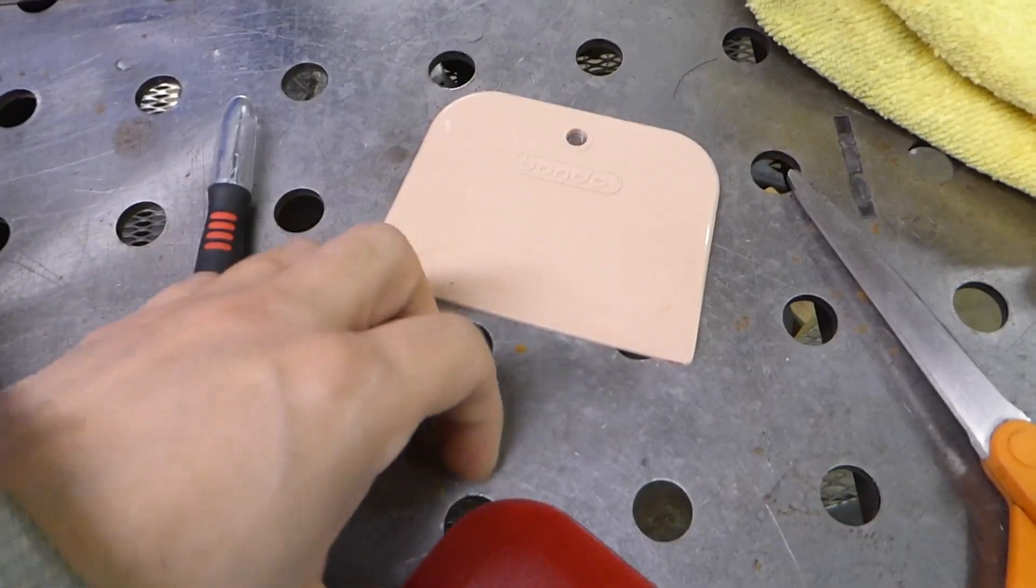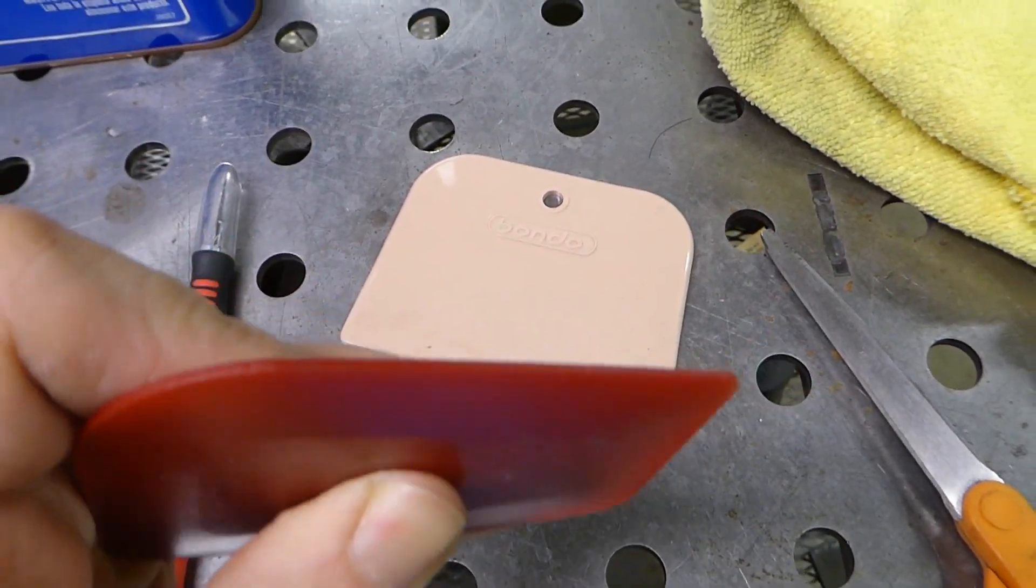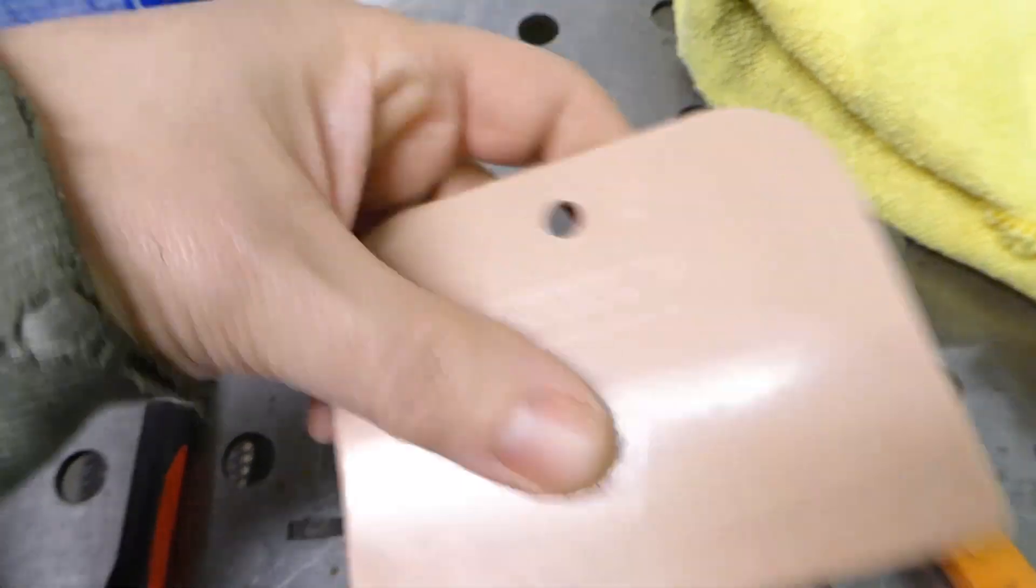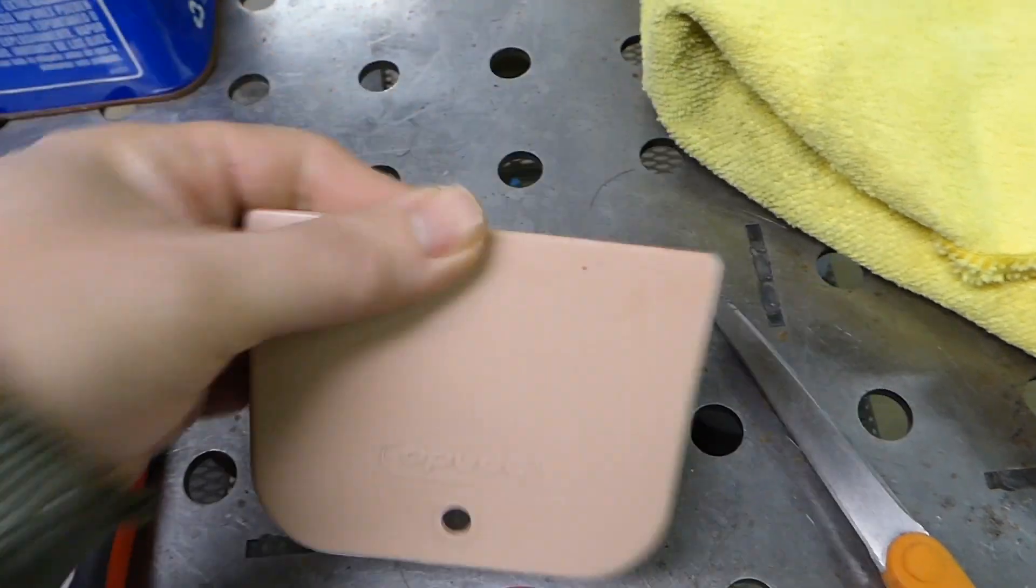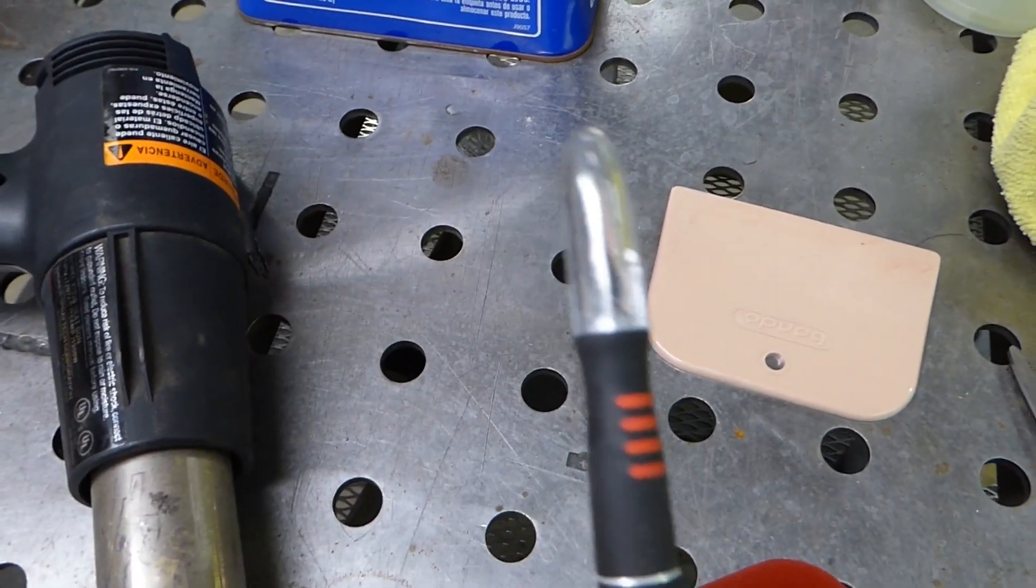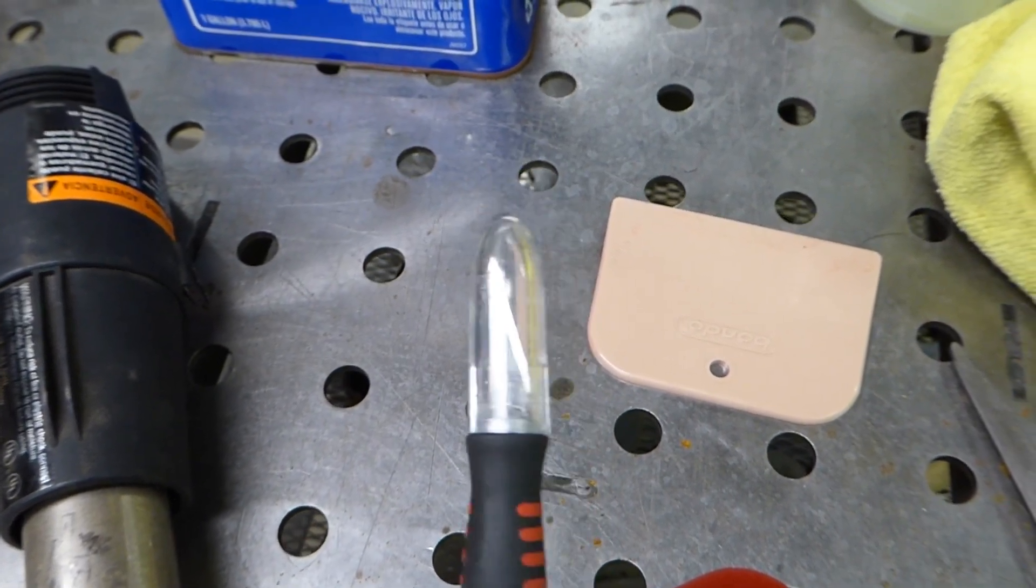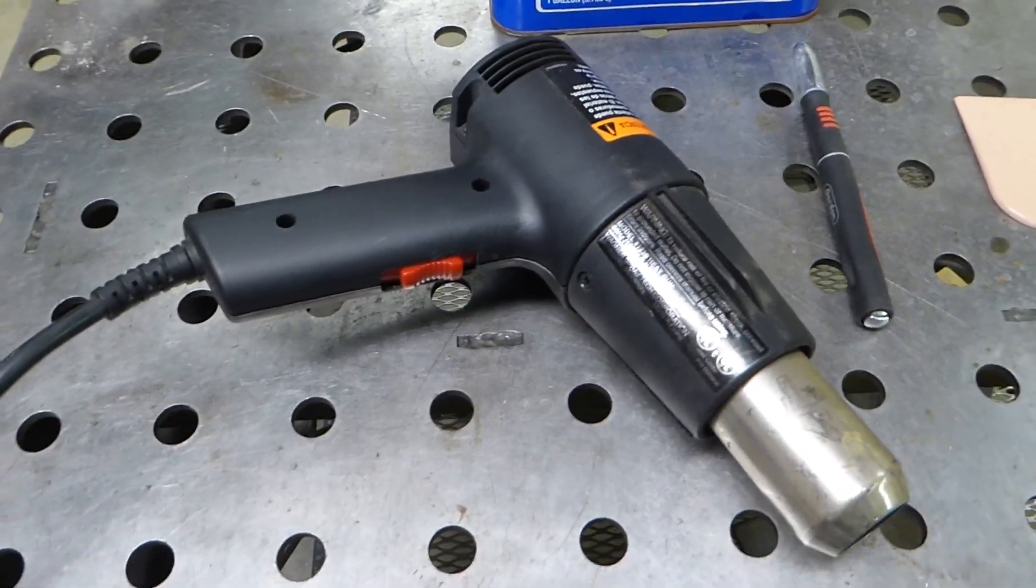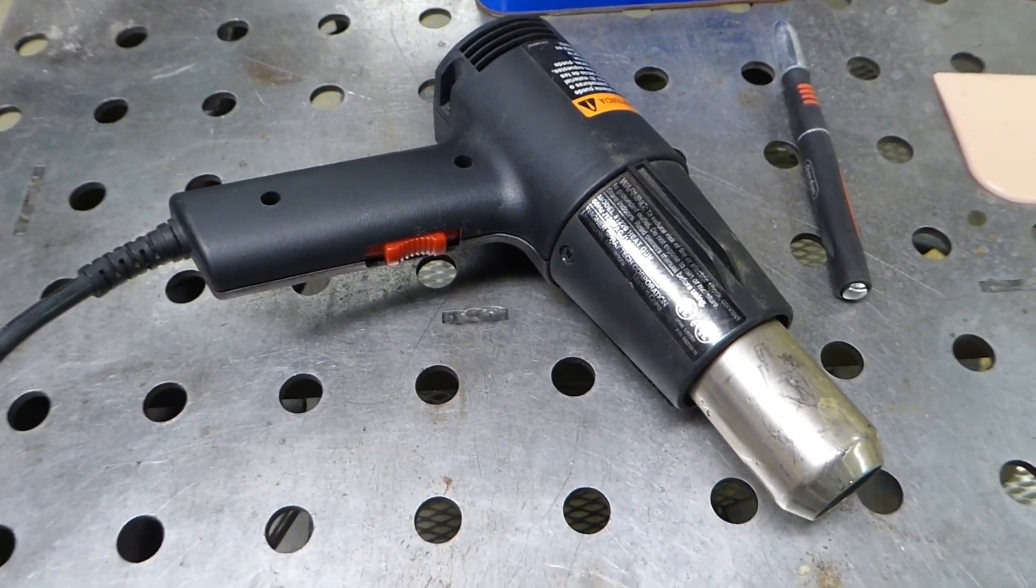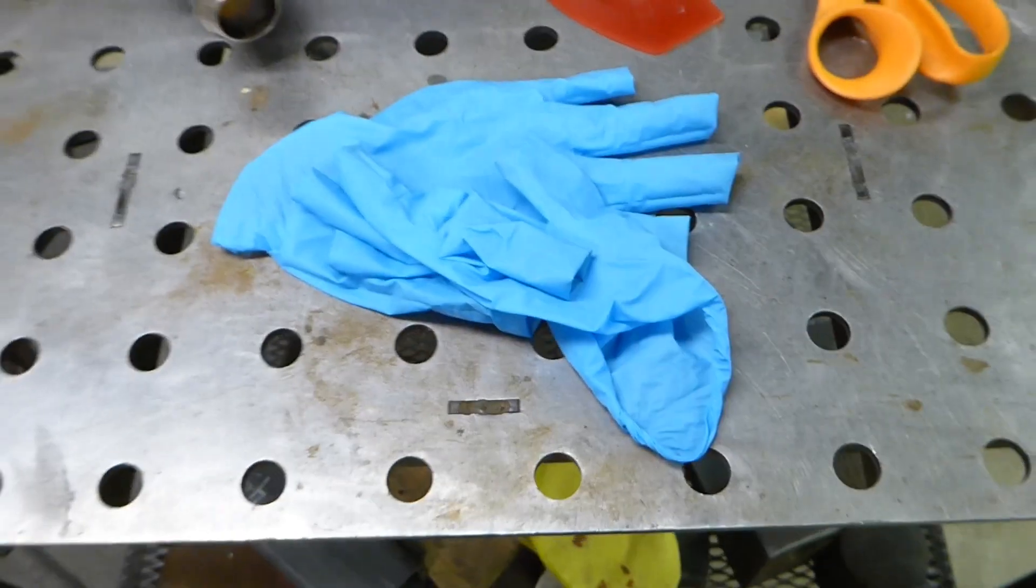A couple little squeegee scrapers here. This one's a bit more rigid. I like using this one here. This is actually a Bondo one because it is a little more flexible. It's a little more forgiving, especially around contours and curves and stuff. A little X-Acto knife. This is for if we end up with any bubbles, we will just pierce them with a tip and then smooth them out. A heat gun. You can maybe get away with a hair dryer, but be a man, use a heat gun. And of course, some gloves.